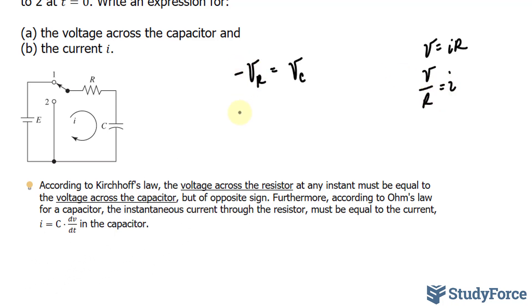V over R, which I'll replace with this, is equal to, therefore, the capacitance, which is in farads, times dV over dt, the rate of change of voltage with respect to time. So we have C times dV over dt. We have successfully combined both of these laws, and now we're ready to find the answer to question A.